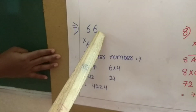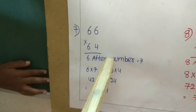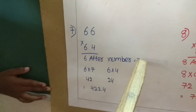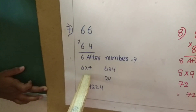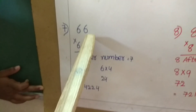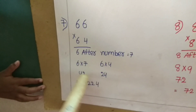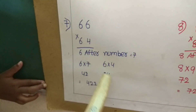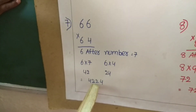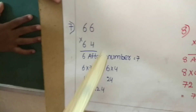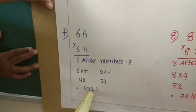66 into 64. The tens digit 6, the next number is 7. 6 into 7 is equal to 42. Units digit multiplication: 6 into 4 is equal to 24. Now the answer is 4224. 66 into 64 is equal to 4224.